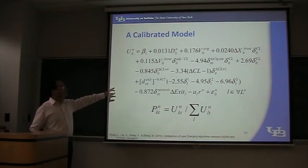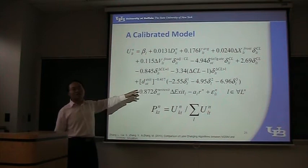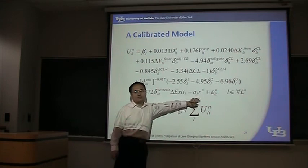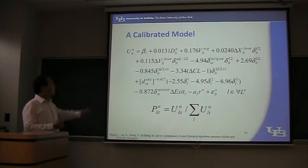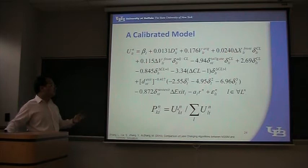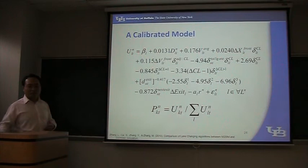A calibrated model will look like this — I put it here to show you how complex it is. The utility will be a function of all these things. You cannot remember or understand all of them, but you can see there are a lot of parameters, explanatory variables, and random effects. After calculating this, you can use the utility of each lane to make a discrete lane choice. The probability of a lane choice is equal to the utility of that lane divided by the summation of all utilities.